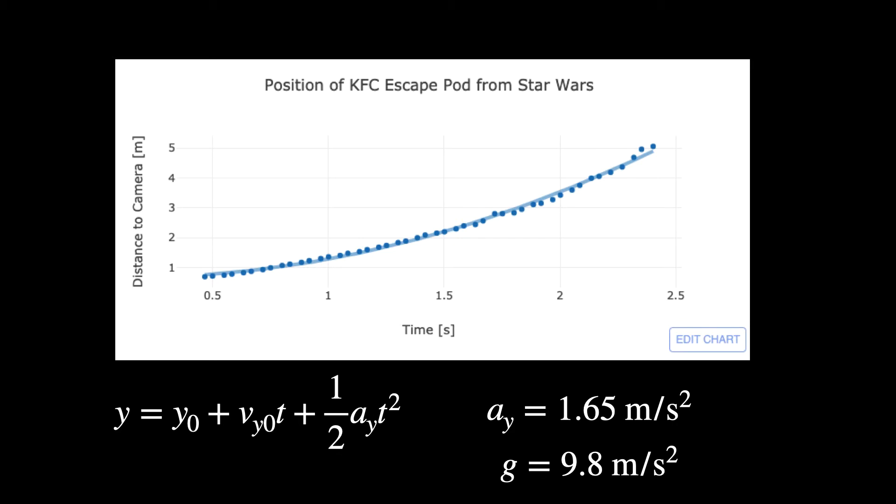Check that out. Okay. So this is a plot of the position as a function of time for that falling escape pod chicken bucket. And you see that it does look like a parabola. It's not a straight line. So that is really cool.